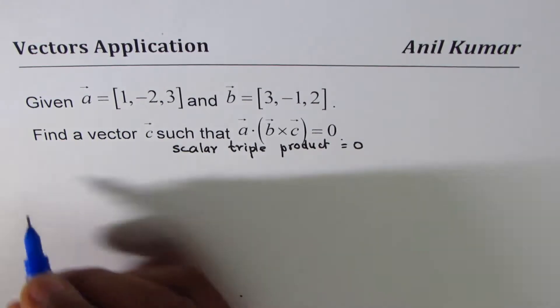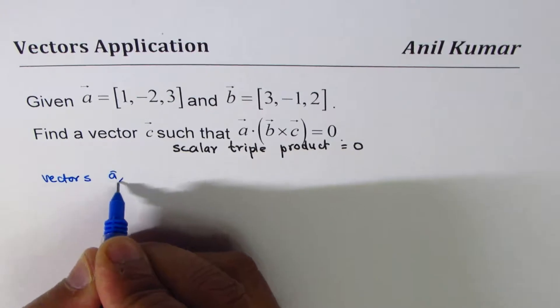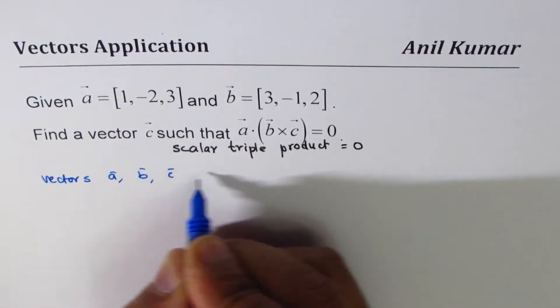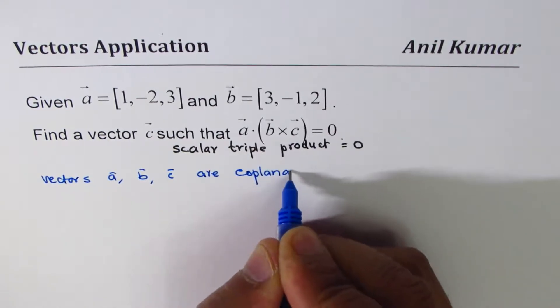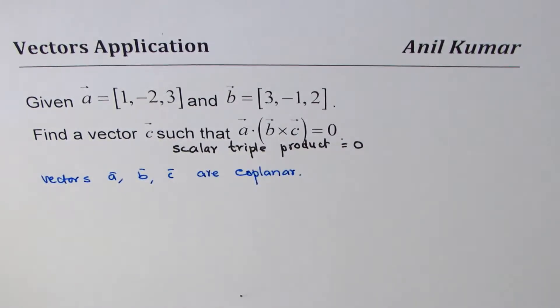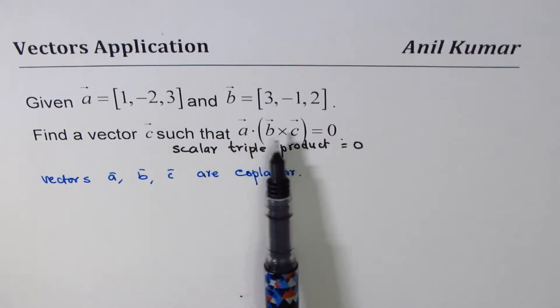When we're saying a dot (b cross c) equals 0, we're saying that the vectors a, b, c are coplanar. Let me show you how.